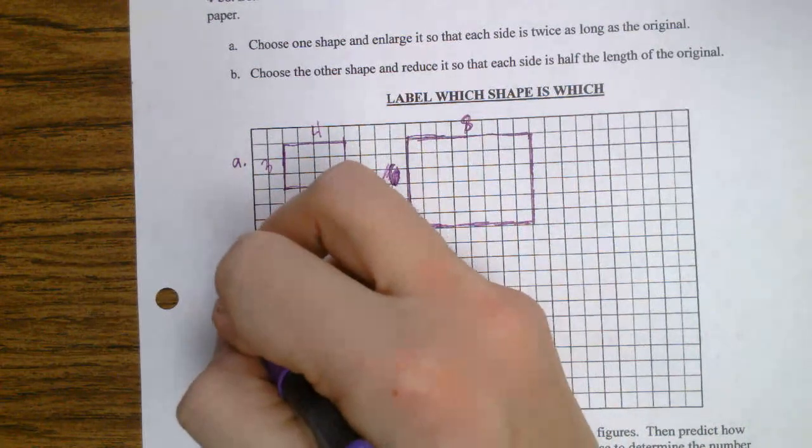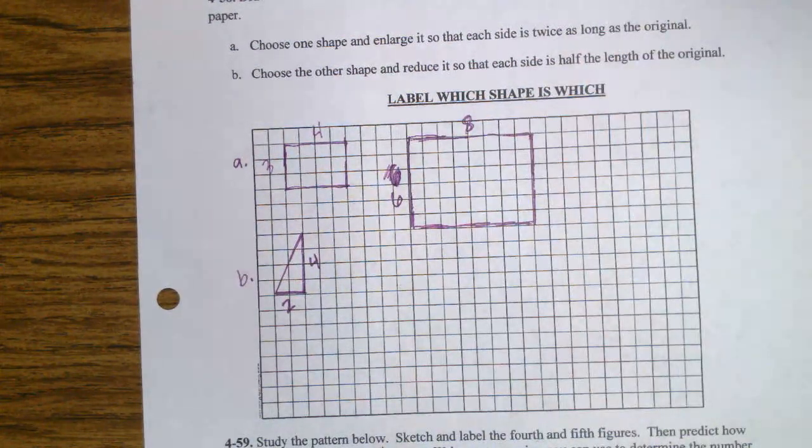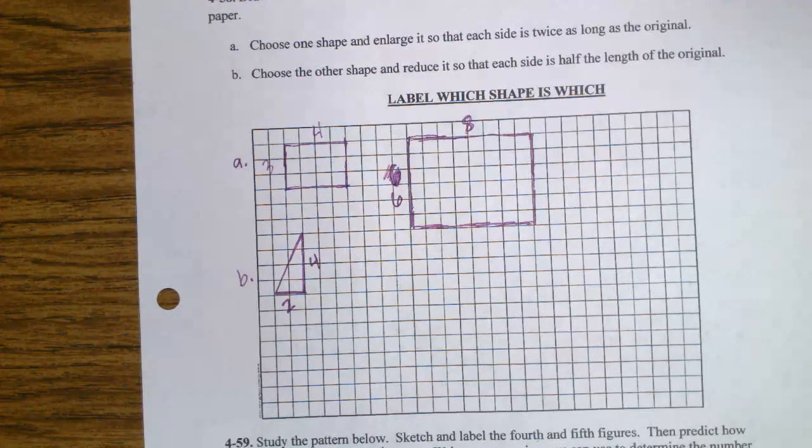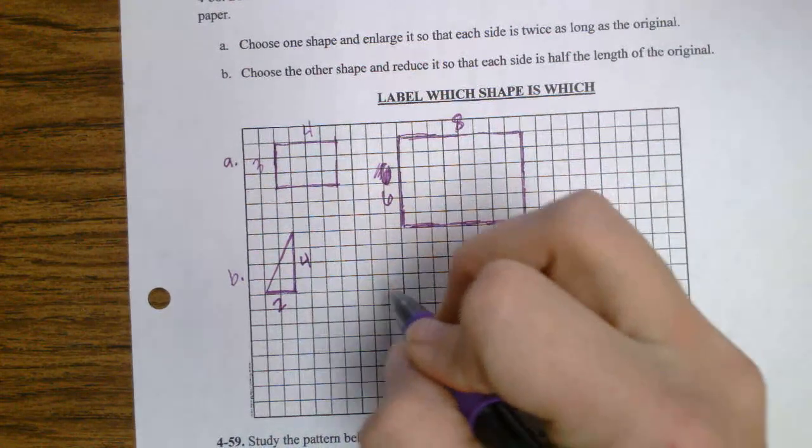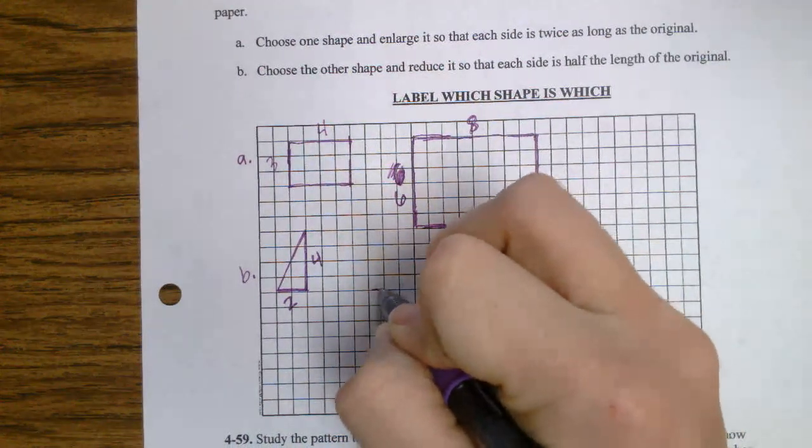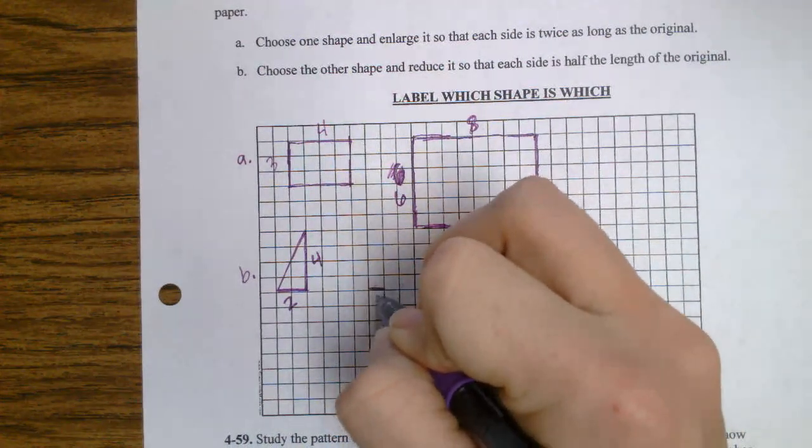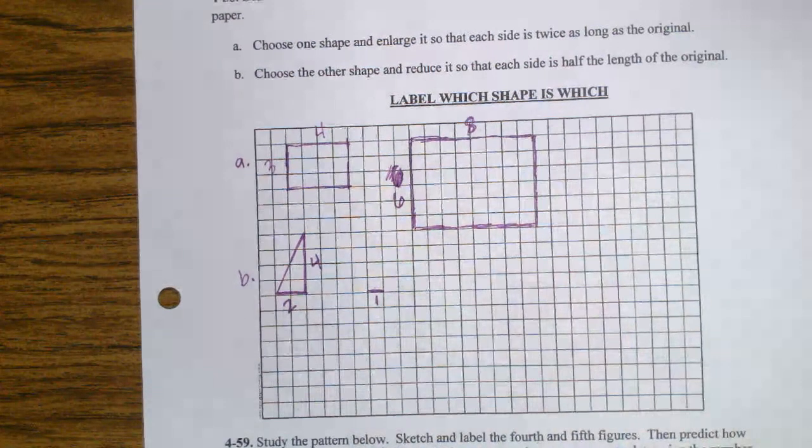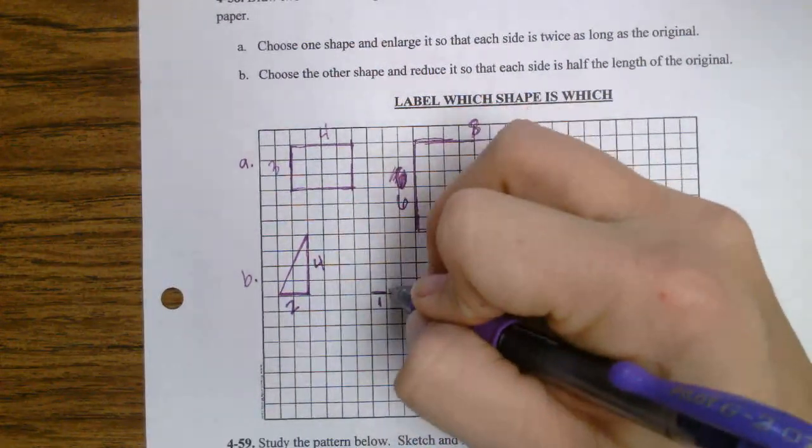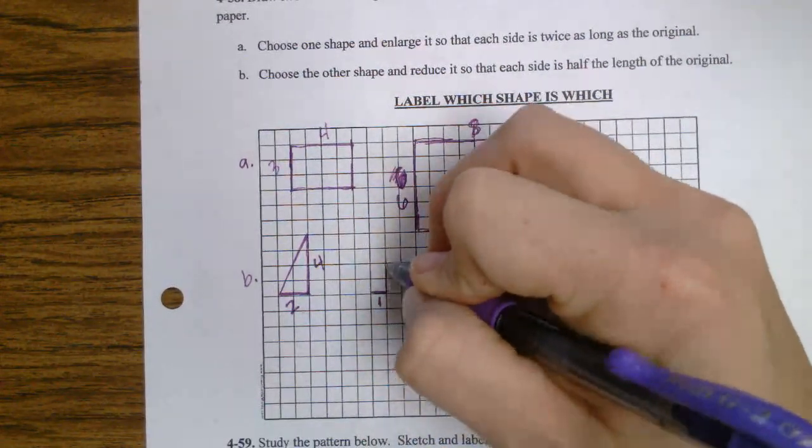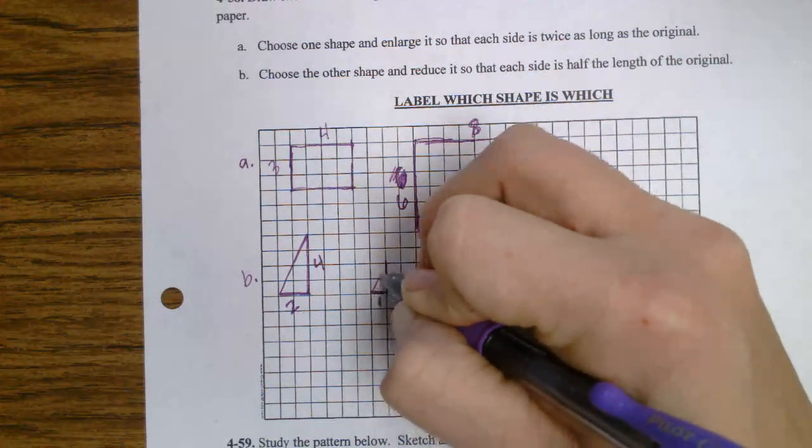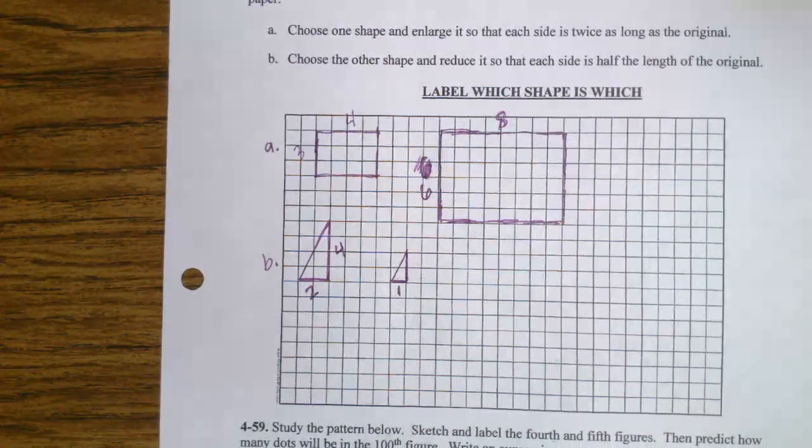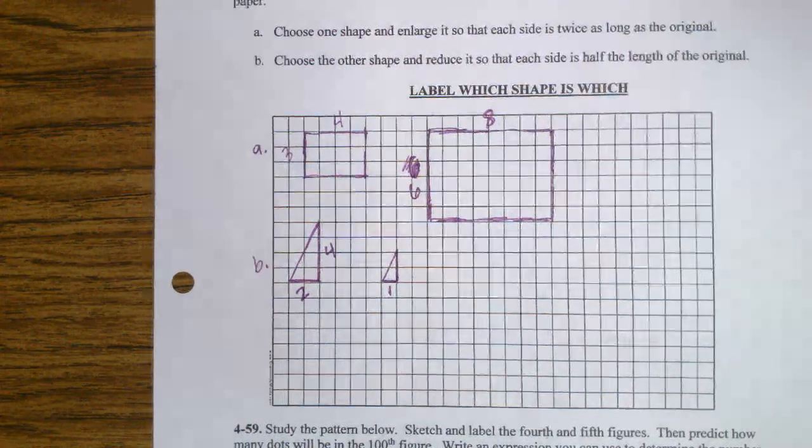For part B, it says to choose the other shape and reduce it so that each side is half the length of the original. Well, one half of 2 is 1. One half of 4 is 2. And then I'm done. That's it.